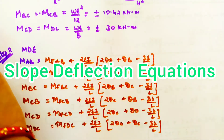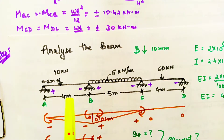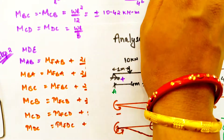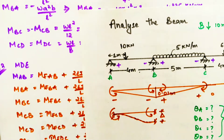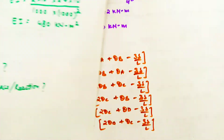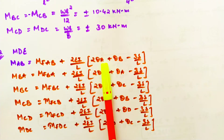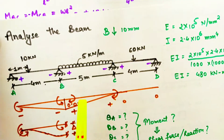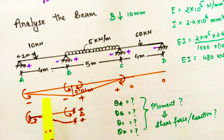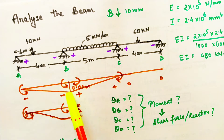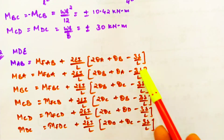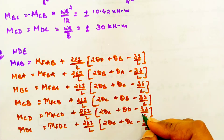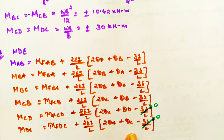Next we write the slope deflection equations for AB, BA, BC, CB, CD, and DC. The slope deflection equation includes the fixed end moments plus 2EI/L times (2θA + θB − 3δ/L). If AB is being written, A appears twice and B once; if BA, then B is twice and A is single. For delta, we use the correct positive/negative sign, with δ = 0.01 m for the sinking spans.